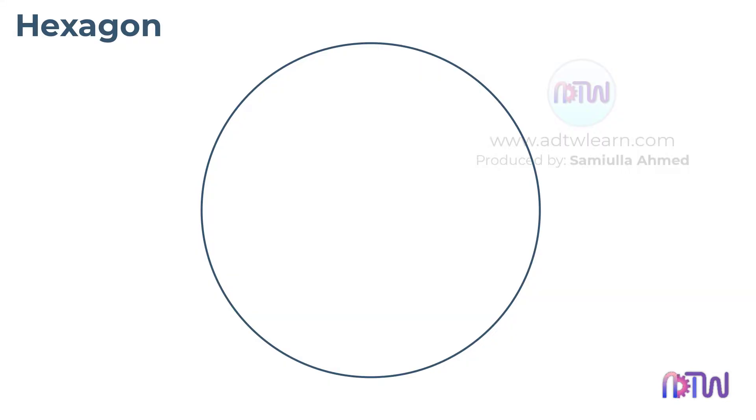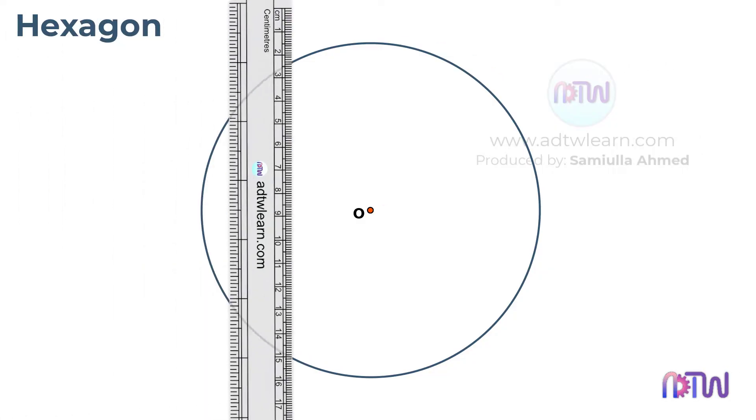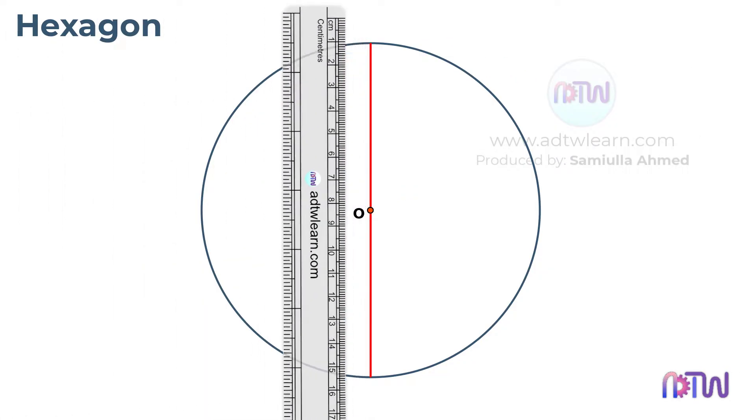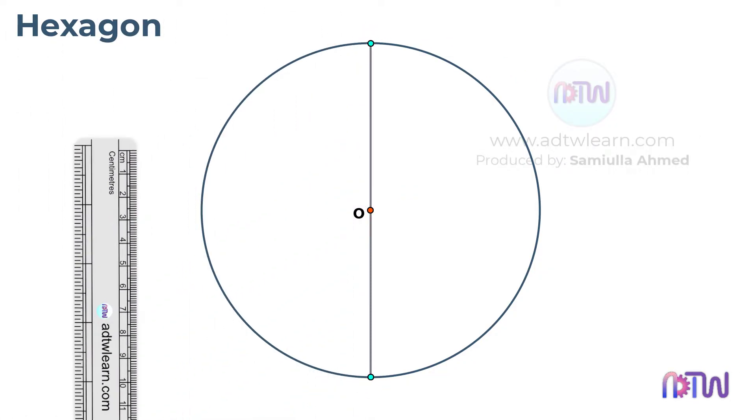To do so, draw a vertical line passing through the center of this circle, such that it touches the circumference. Label these points as A and B.